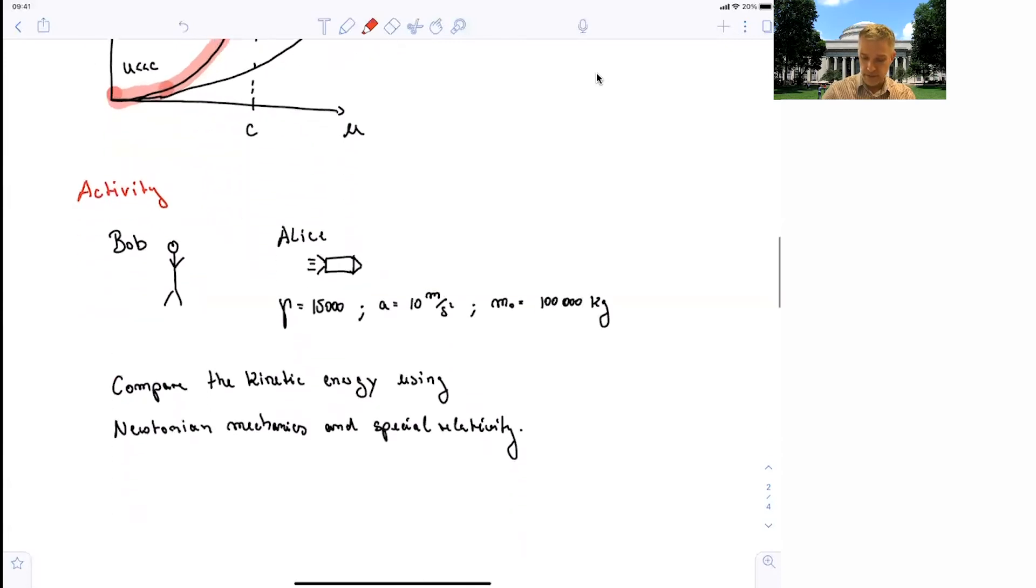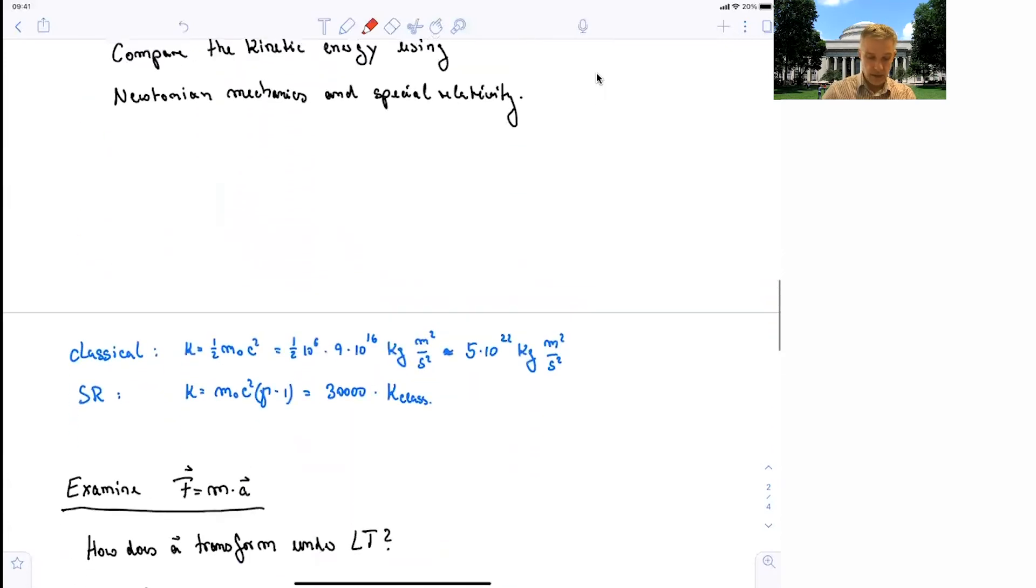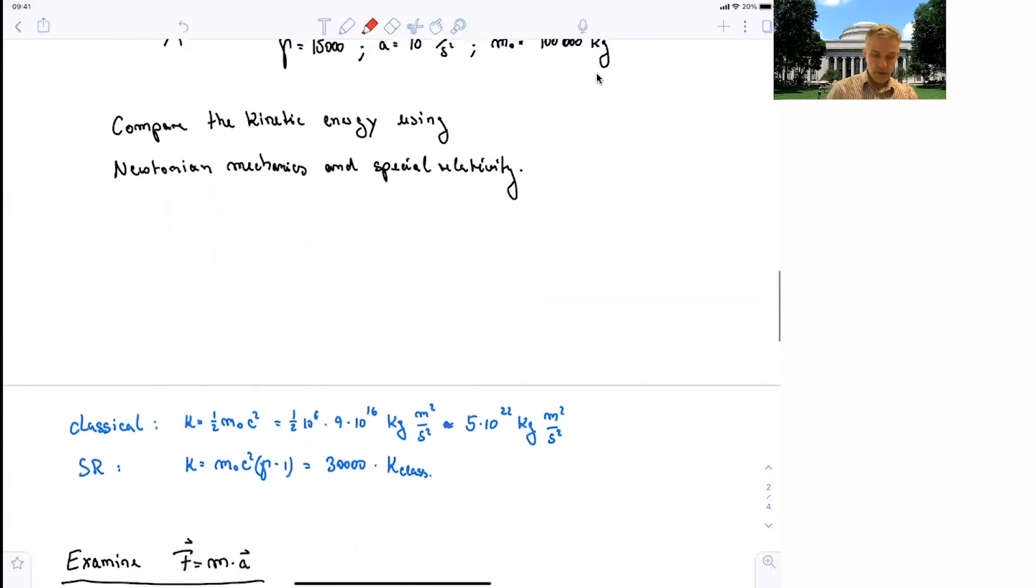And you find that the difference is astonishingly large. So if you just work this out, 1/2 m c squared, we can just do c squared here because the velocity is basically c, 5 times 10 to the 22 kilograms meter squared over second squared. And in relativistic terms, the answer is 30,000 times larger.